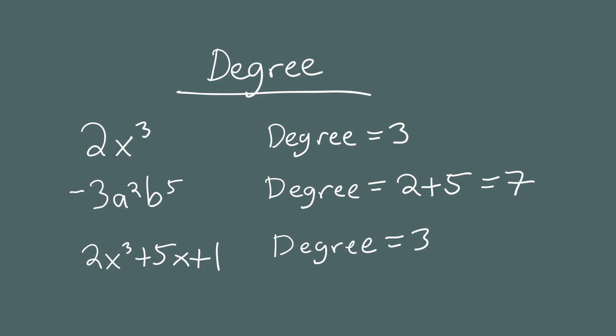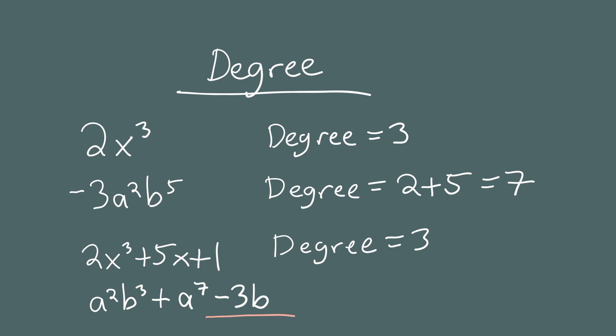Finally, let's look at a polynomial with more than one variable: a squared b cubed plus a to the 7th minus 3b. The degree of the first term, a squared b cubed, is 2 plus 3 equals 5. The degree of the second term, a to the 7th, is 7 since there's a single variable with exponent 7. The degree of the last term, negative 3b, is 1 because the implied exponent is 1. The largest degree among all terms is 7, so the degree of this polynomial is 7.